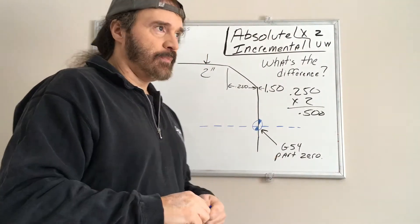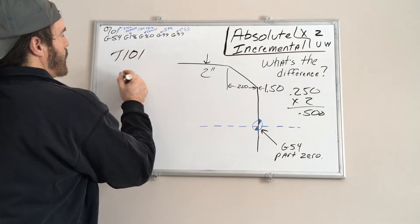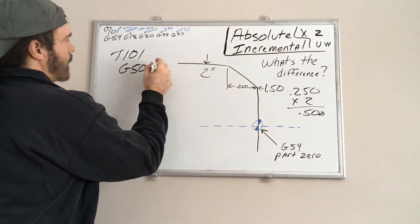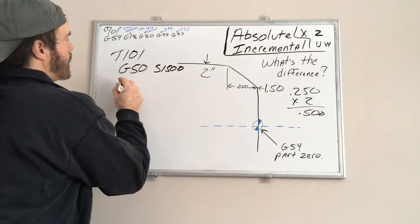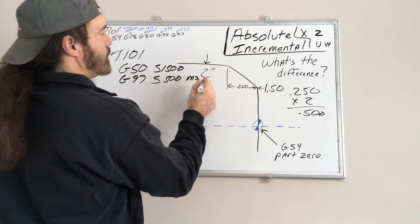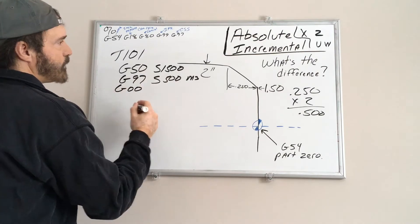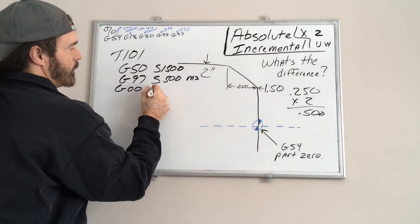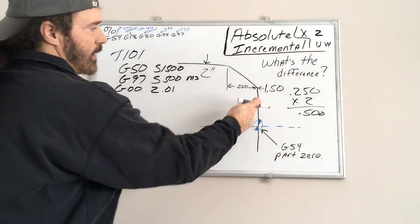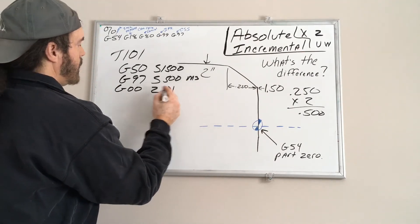How would we write that? If you're doing it in absolute, we'll say 201 offset one. Let's say I'll just make this something up super quick. We'll do a G50, I don't know, we'll say S1500. We want to start the spindle at 500 RPM, and that's an M03. We want to rapid it. Say the turret's way over here, we'll rapid it to Z.